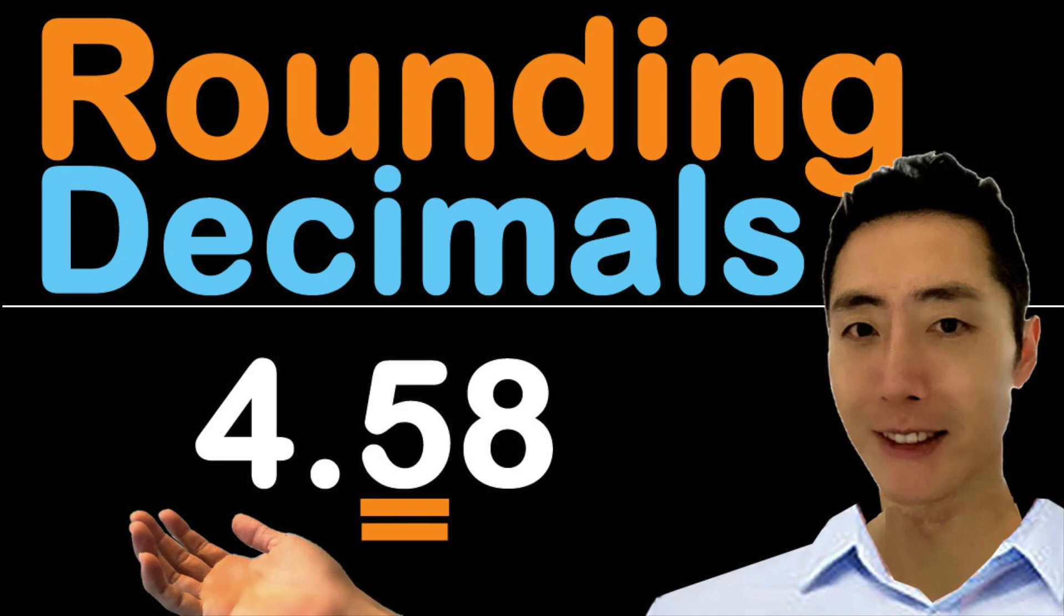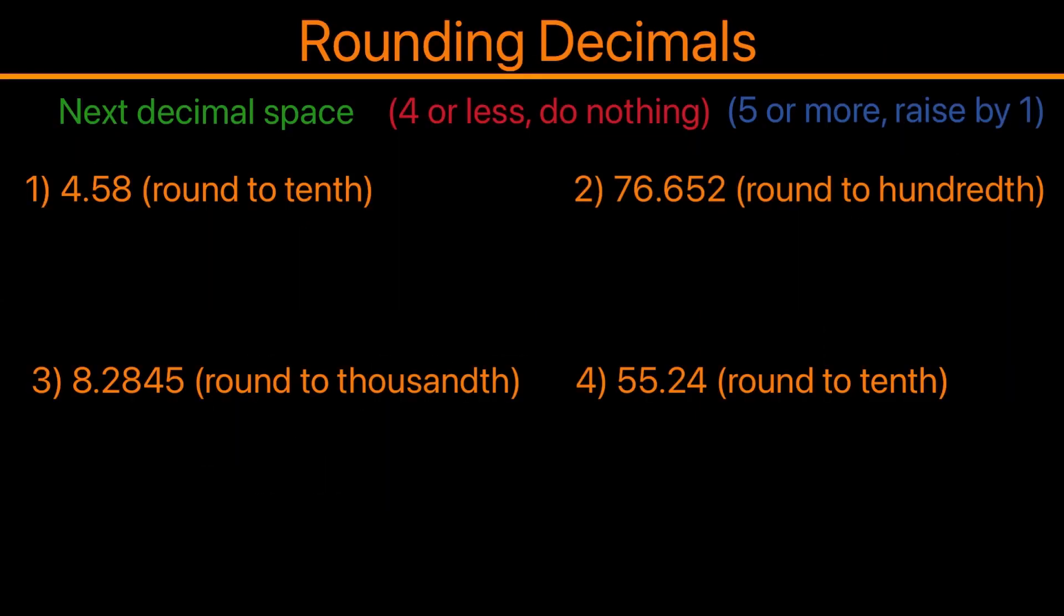In this video, I'll be going over how to round decimals. In order to round decimals, you need to first look at the next decimal space to the right. If you have four or less, you will do nothing.